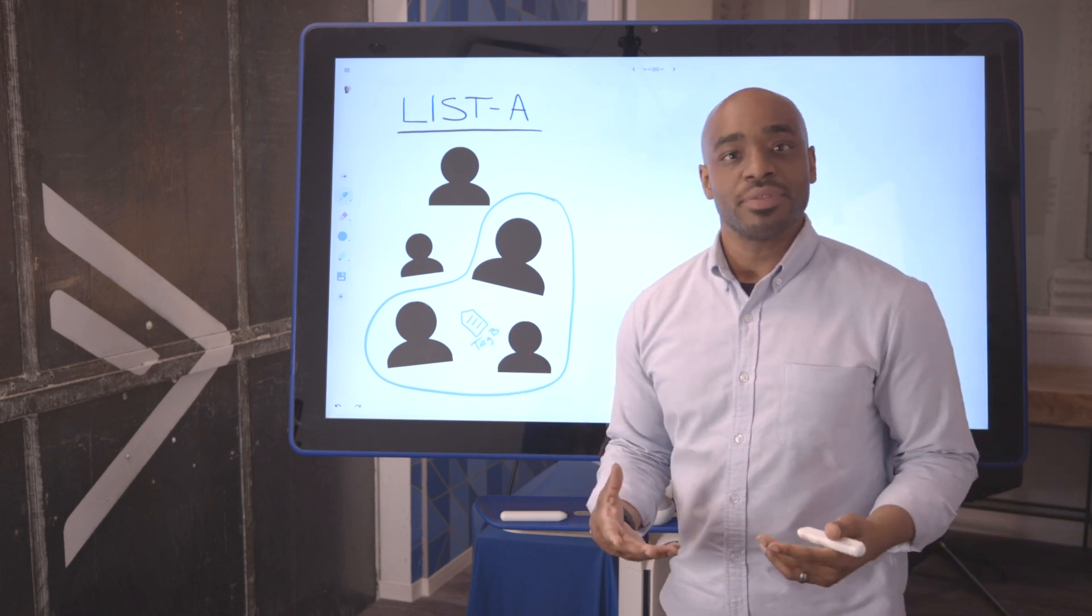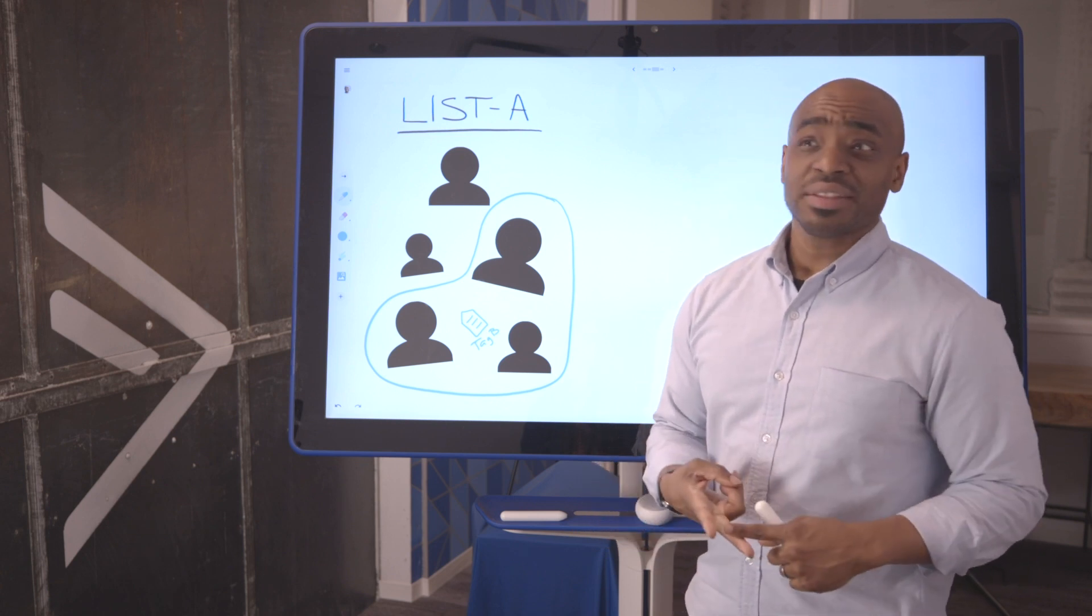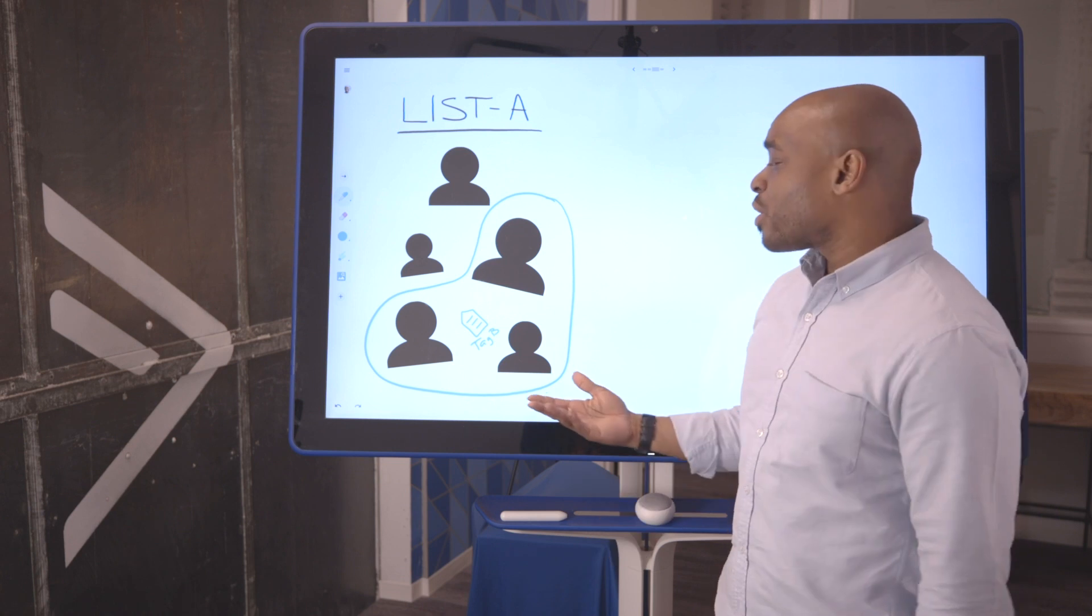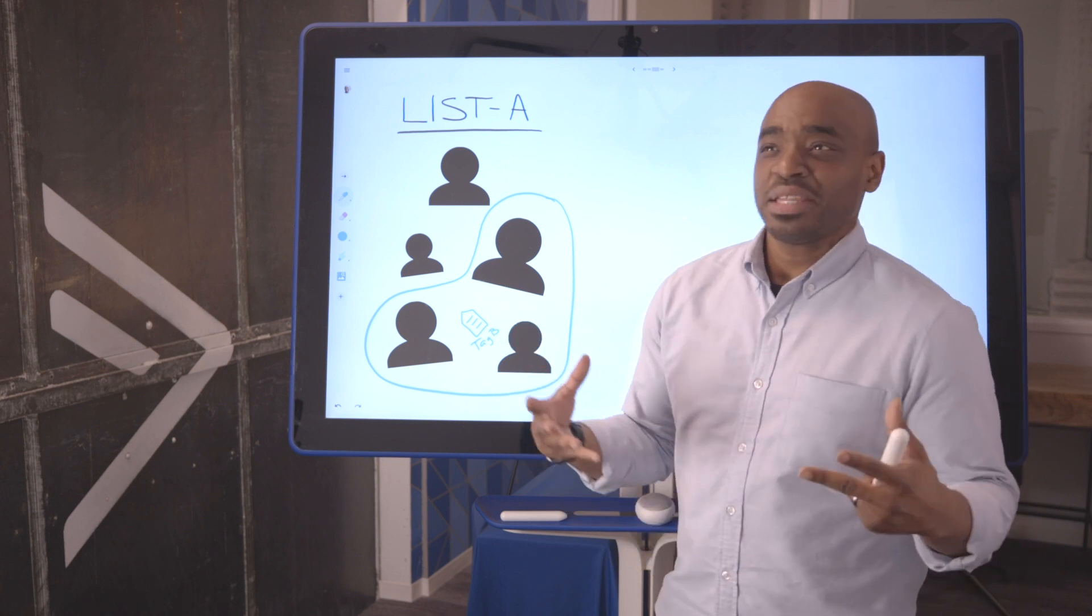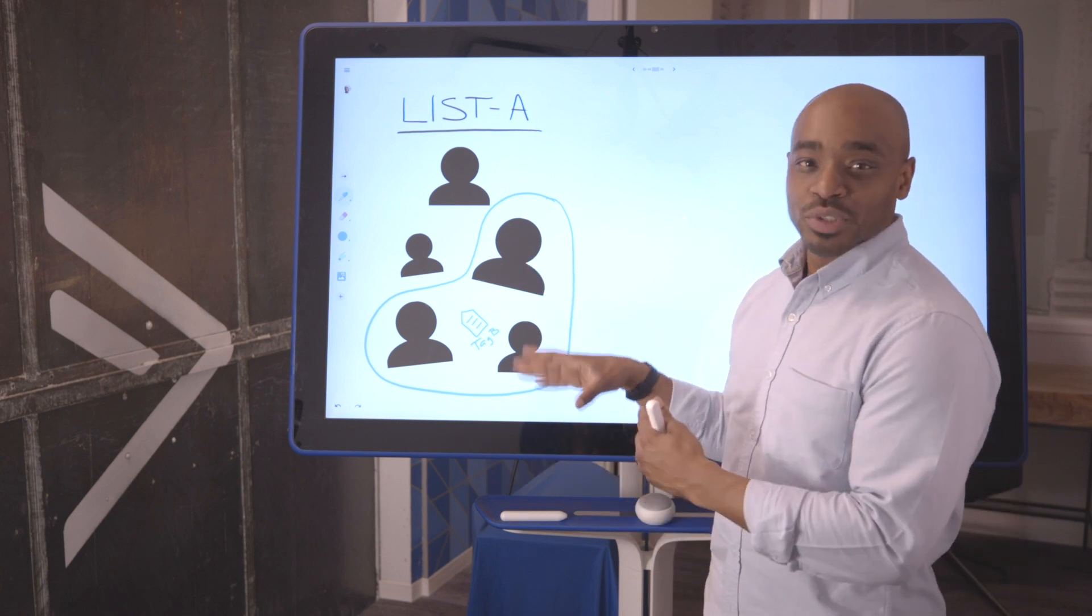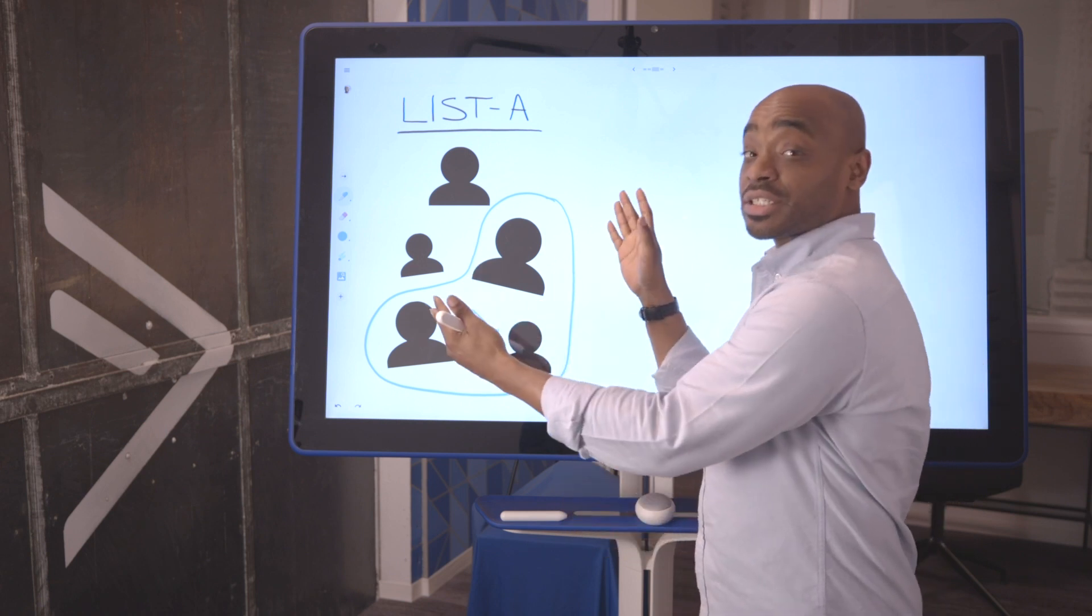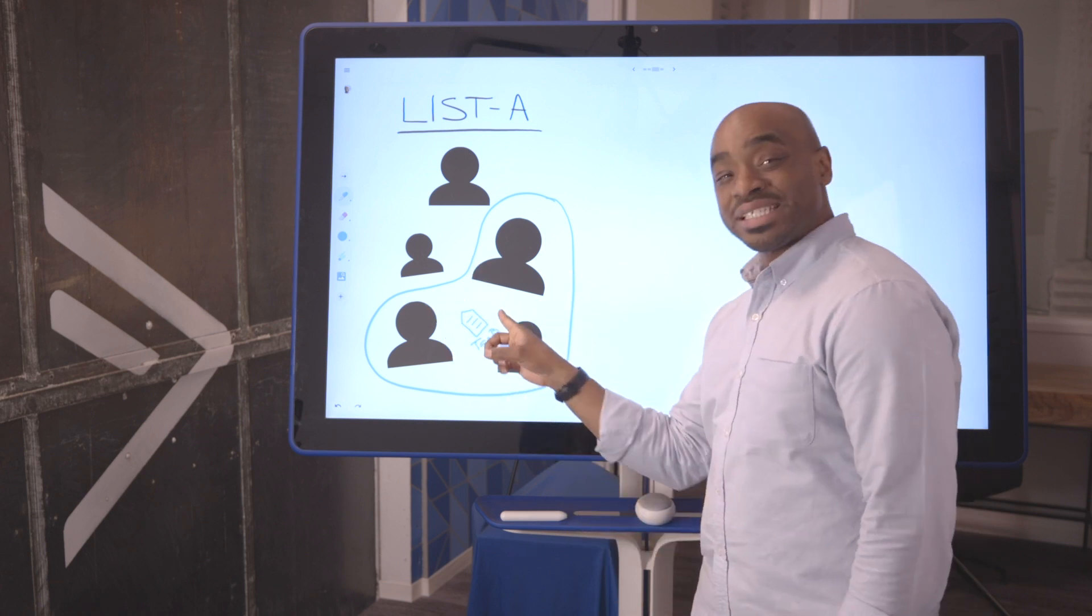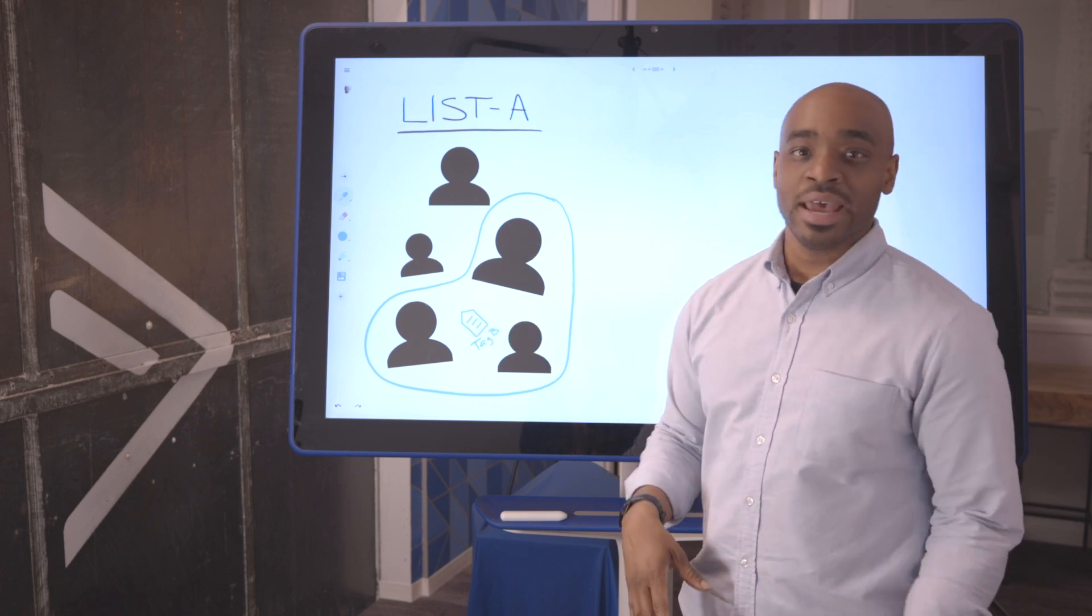And this tag could represent many things. It could be as simple as a web page that they visited, a link that they clicked in an email, or perhaps it represents a product that they've purchased. Maybe they love purple shirts and these people are your purple shirt folks. So instead of sending broad messaging to the entire list, you can now send specific messaging to these groups of people based on their tag.